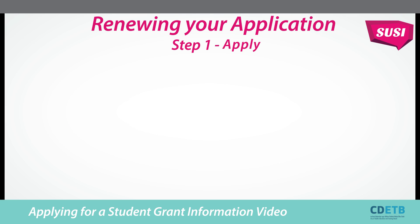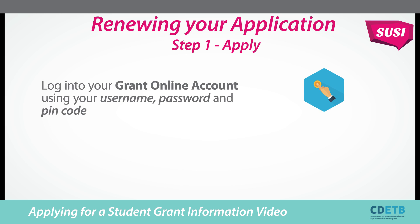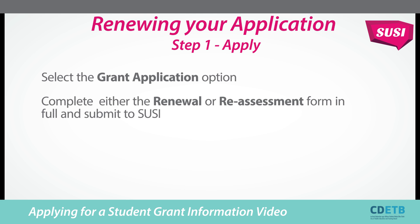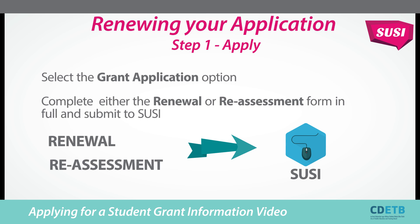To renew your grant application, Step 1, Apply: login to www.susie.ie and select the apply button on the SUSIE homepage. Login to your grant online account using your username, password and PIN code. Select the grant application option on the left hand side of the screen. Complete either the renewal or reassessment form in full and submit to SUSIE.